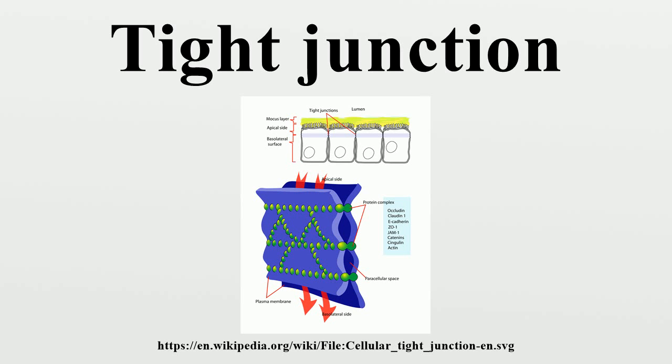Internal epithelia on the other hand more often rely on tight junctions for their barrier function. This kind of barrier is mostly formed by only one or two layers of cells.